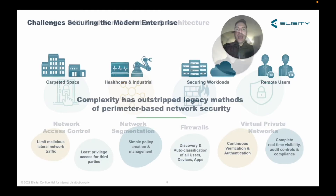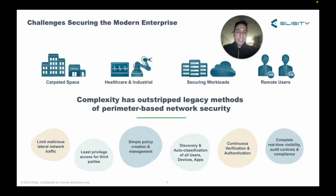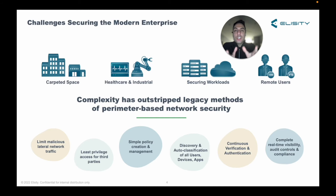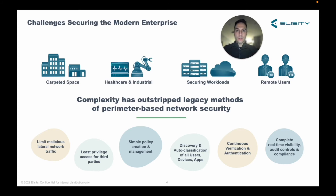Let me show you a more optimal way to do this. The complexity we face today has outstripped legacy methods of perimeter-based network security. We need to limit malicious lateral network traffic, provide least privileged access for third parties — and it needs to be simple to build these policies and scalable to distribute them across any venue. Identification of anything and everything on a network should be seamless and accurate. Once identified, continuous verification and authentication of identities should be occurring, along with complete real-time visibility and audit controls. Enter Elicity.